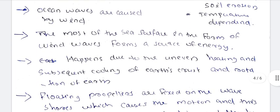Waves occur due to the uneven heating and subsequent cooling of Earth's crust and the rotation of the Earth.